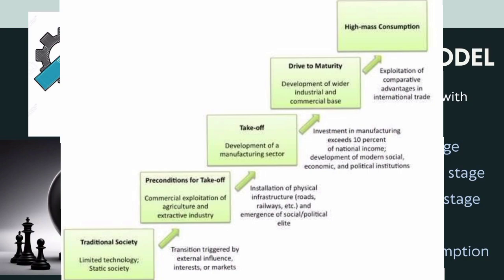In the drive to maturity stage the economy is more sophisticated and more sustainable as societies mature. The fifth and last stage is the age of high mass consumption — the consumer goods sector becomes very dominant, consumer goods are widely available, technological advancements continue, and there is a focus on social welfare. These five stages together describe Rostow's complete model of modernization and development.